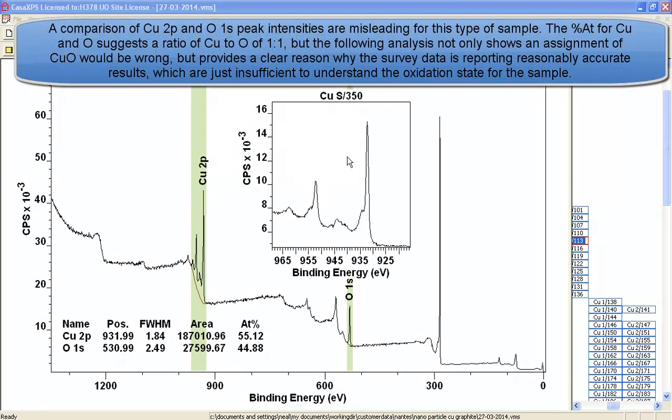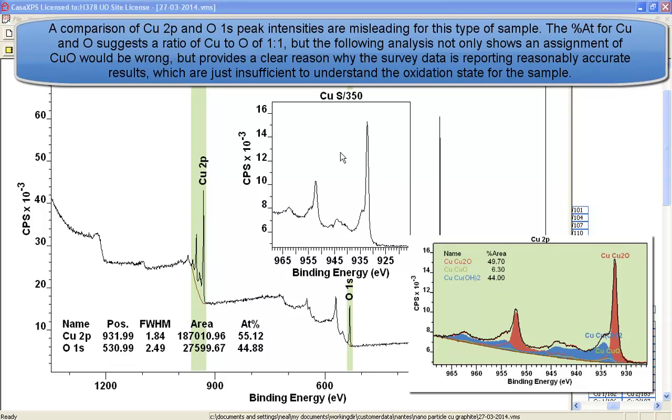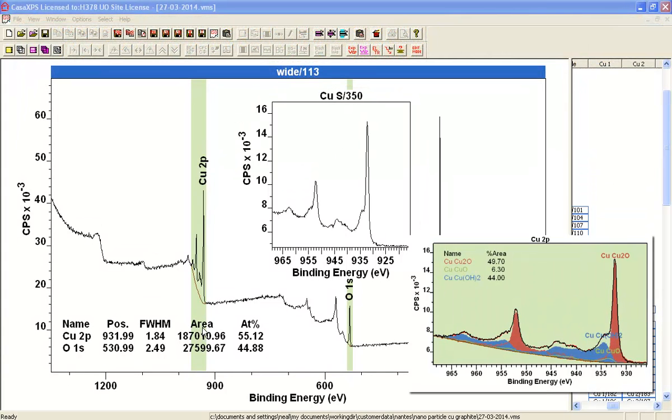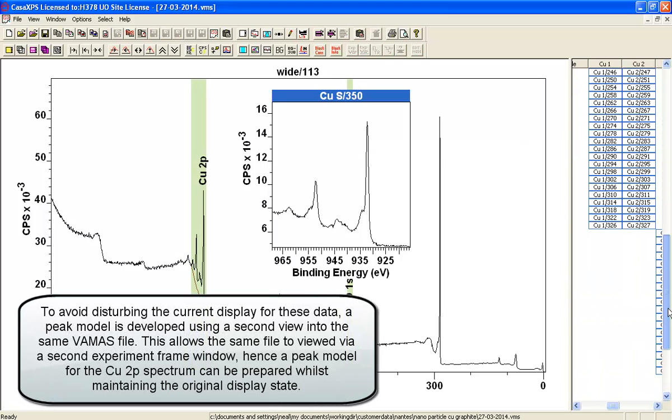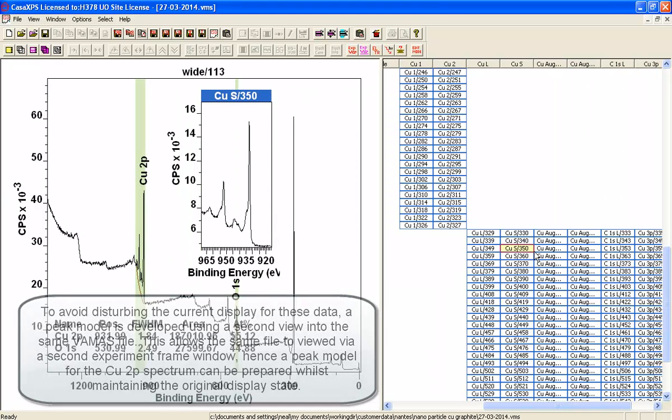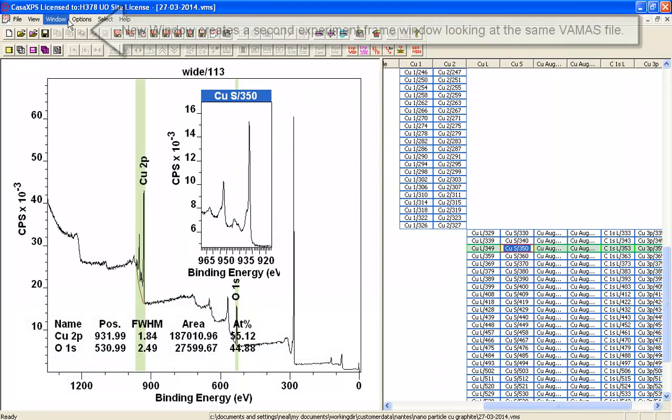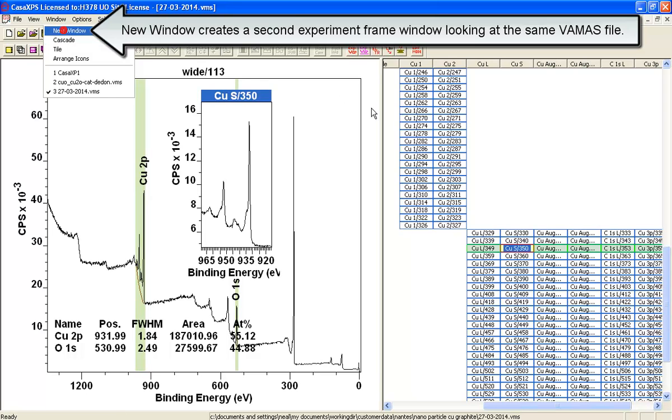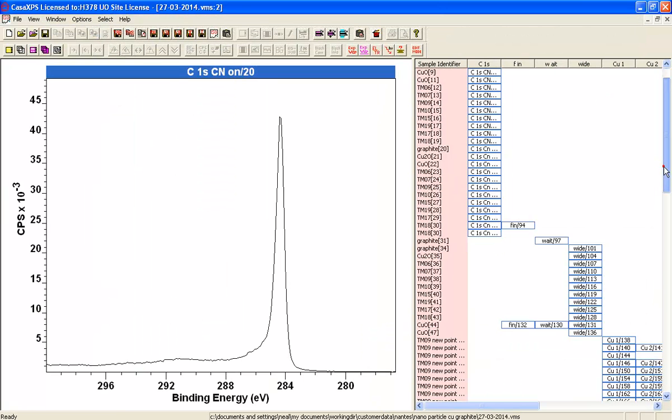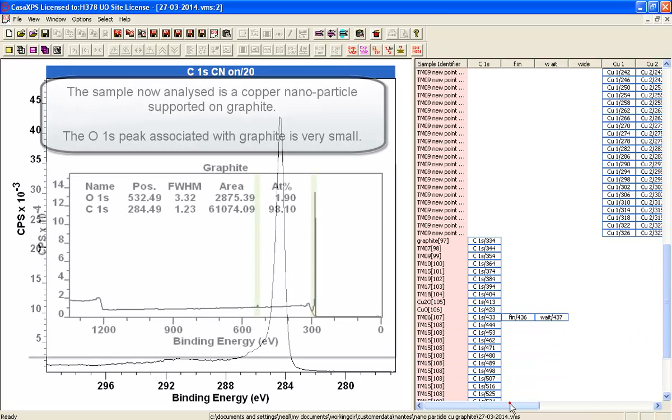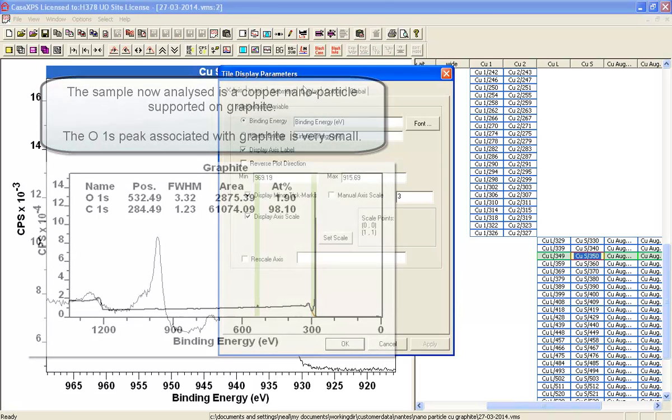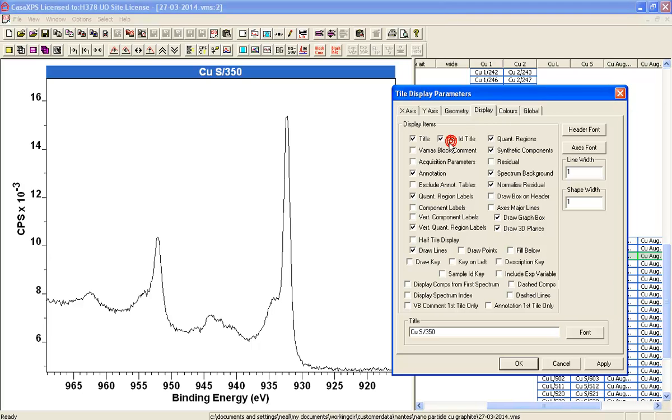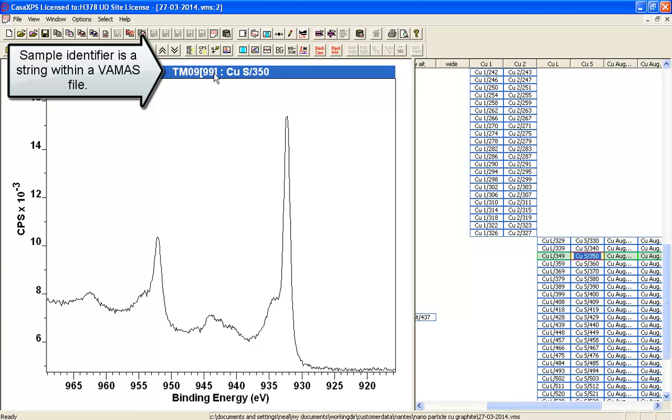We need to do some further analysis of this high-resolution spectrum to try and understand what the actual oxidation state is for these data. So let me just click on that, and let's find the VAMAS block. There it is. So what I want to do is do a bit of processing here. Let me just verify that I've got the same one, so I'll put up the use ID tag. That'll put the sample identifier in with the header, so we can see that it is the same one.